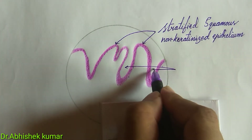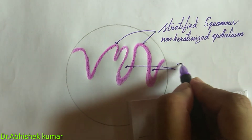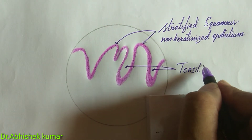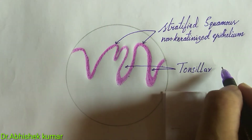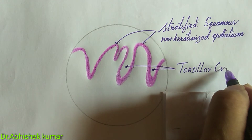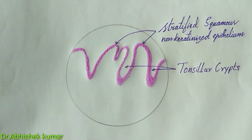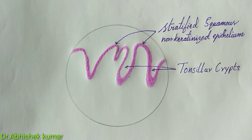Each tonsil is invaginated by a deep groove called the tonsillar crypt. These tonsillar crypts are lined by stratified squamous non-keratinized epithelium.